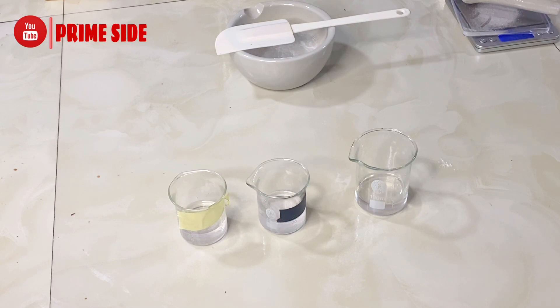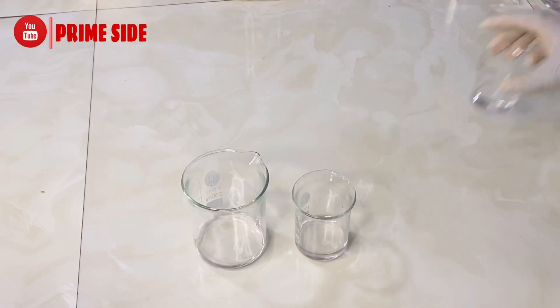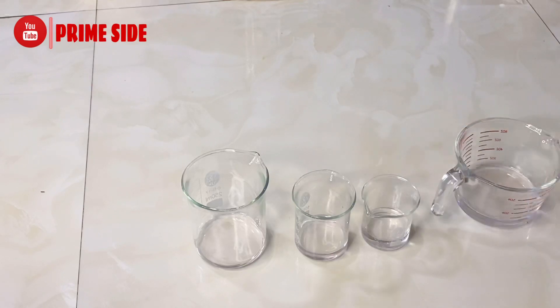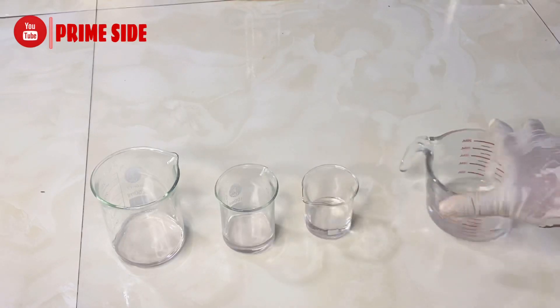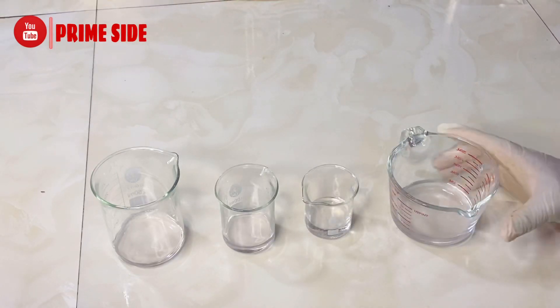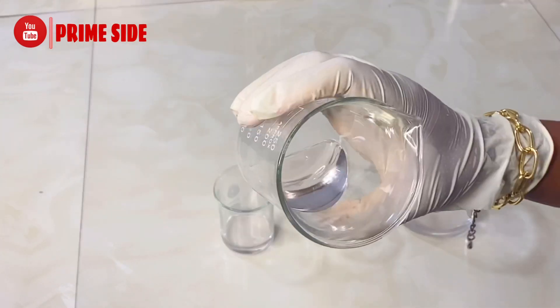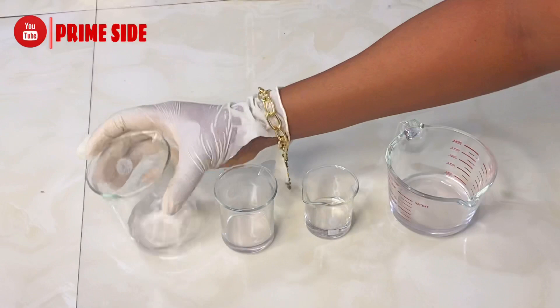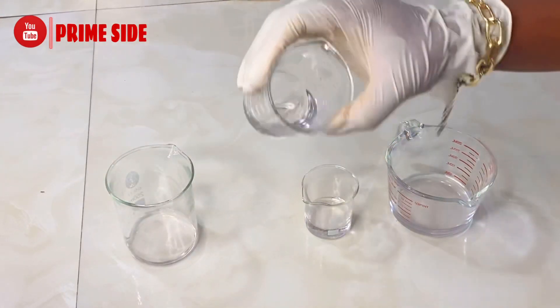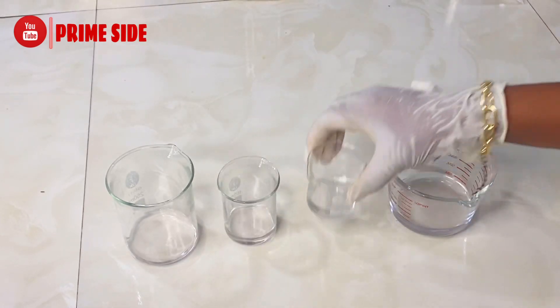I also have another beaker containing propanediol 1,3 with a powdered salicylic acid. So these are a range of solutions I carried out in another experiment: four beakers total, two containing fine and crystal salicylic acid in propanediol 1,3 respectively, and the other two containing fine and crystal salicylic acid in propylene glycol.